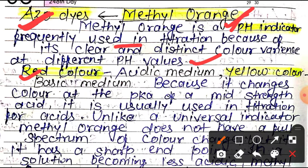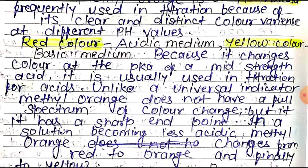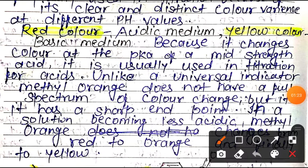Methyl Orange shows red color in the acidic medium and yellow color in the basic medium. You must learn: red color in acidic medium, yellow color in basic medium. Because it changes color at the pKa of a mid-strength acid, it is mainly used in the titration of acids.